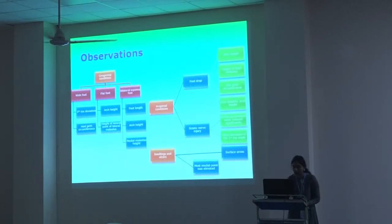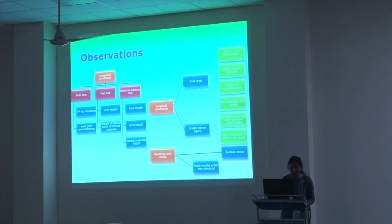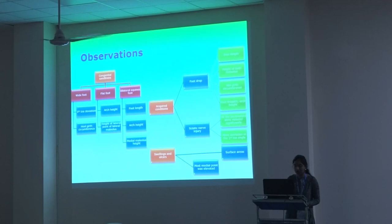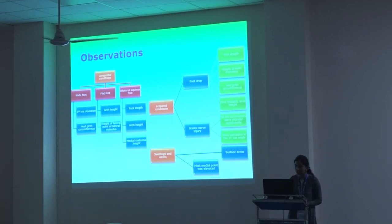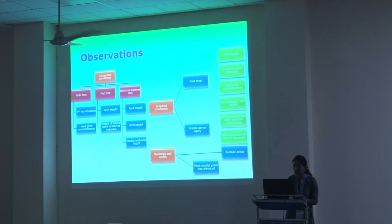On assessment, in the wide foot, there was no deviation in the fifth toe, and the length and circumference were increased. In flat foot, the arch height and the height of the lateral malleolus were decreased. In bilateral weakness foot, the foot length, arch height, and medial malleolus height were increased compared to normal. In foot drop, foot length was decreased, and both width and height parameters were decreased, while ball circumference and foot breadth were increased. In sciatic nerve injury, all parameters were reduced, possibly due to wasting. In swelling and ulcers, the surface area was measured.